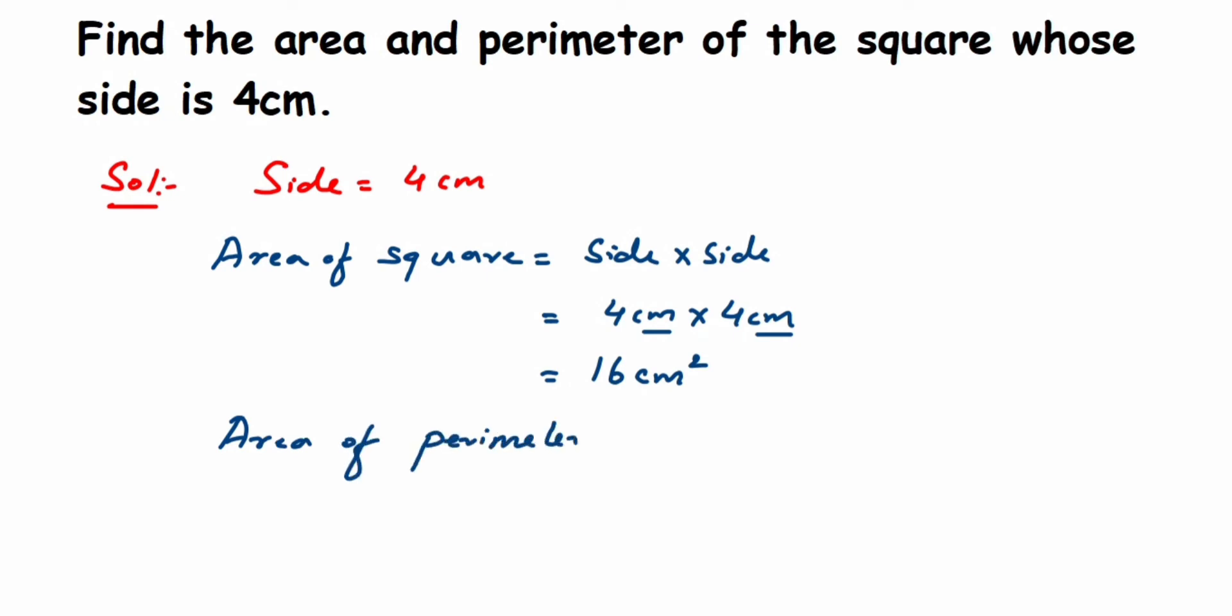Perimeter is equal to 4 into side - this is the formula for perimeter. Or you can add the side four times, it's the same thing. So 4 into 4, side is 4 centimeters, so 4 into 4.